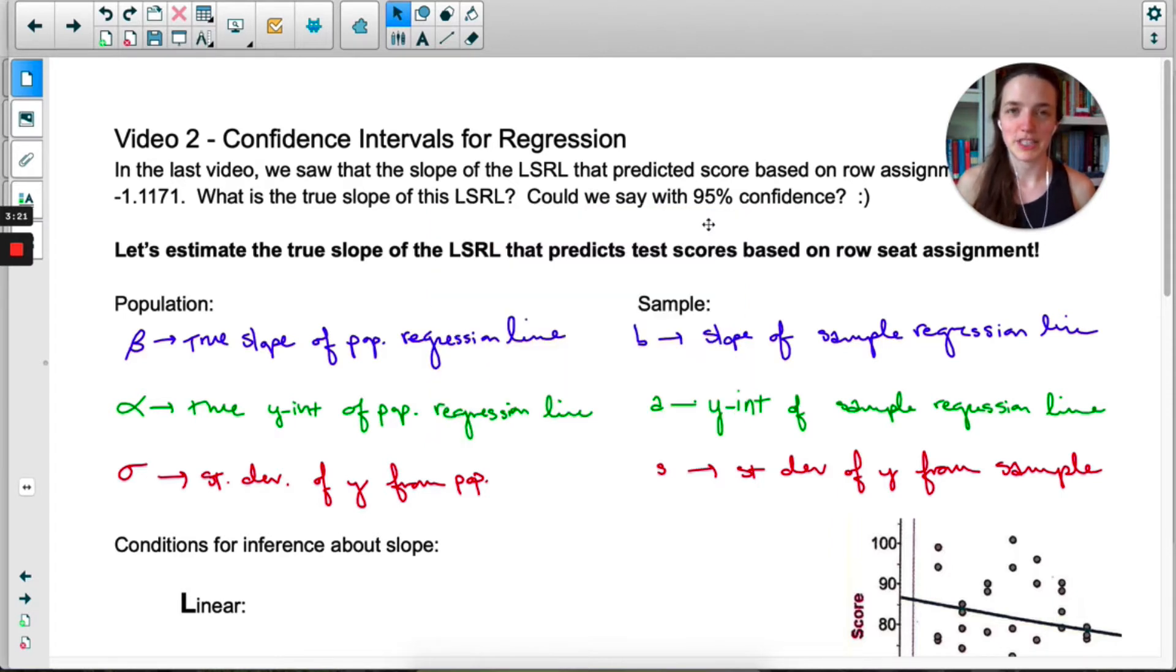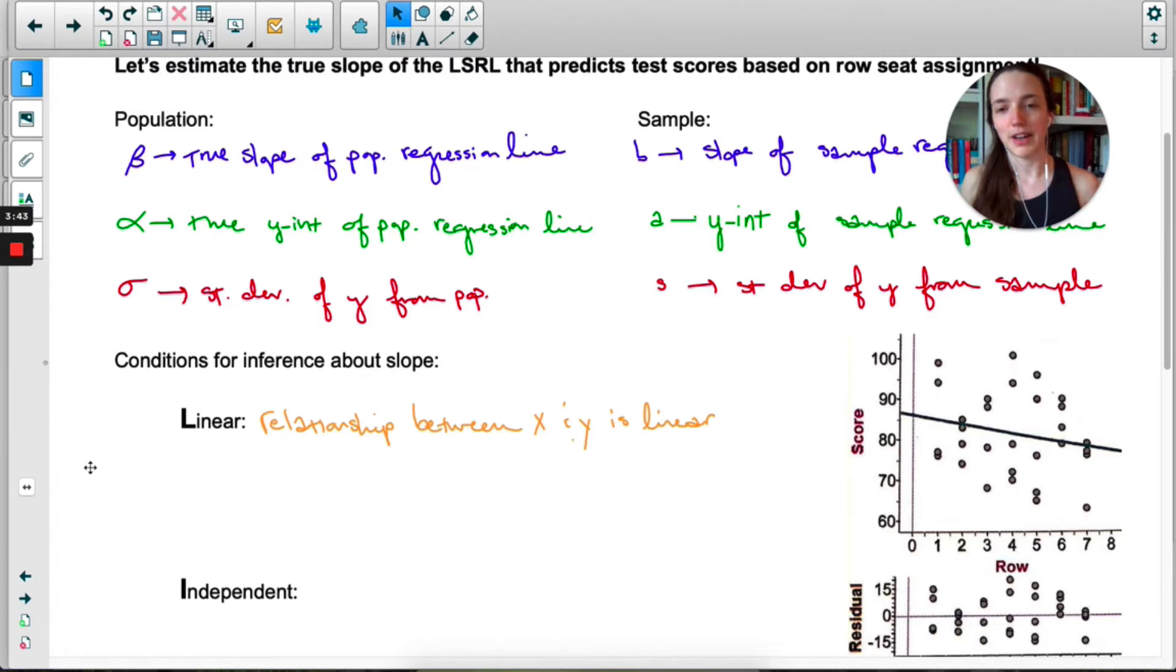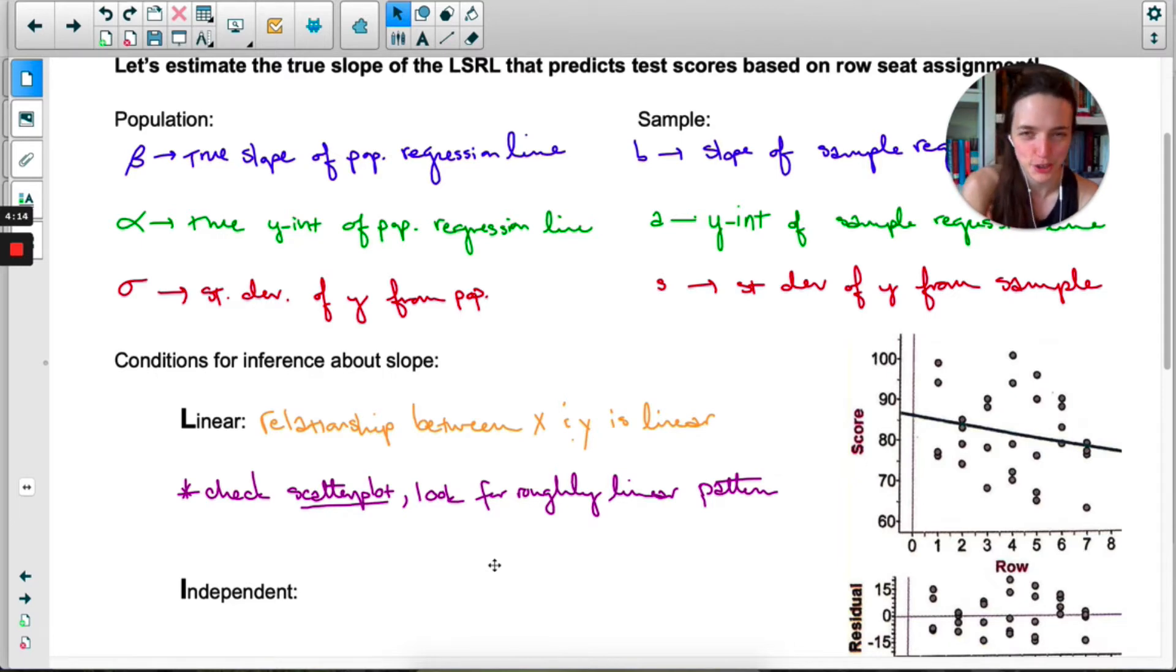The plan step is different this time because scatter plots are very different than a single dot plot or histogram. I'm going to use the acronym my textbook uses. First condition is linear: you have to check that the relationship between x and y is linear. In the last video we said it wasn't, but it's close enough. To see if it's linear, check the scatter plot for a rough linear pattern. It's very rough in this example but we'll say it's linear-ish.